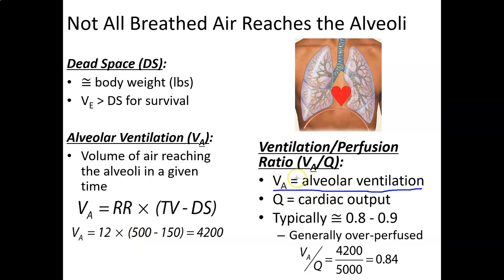Alveolar ventilation is sometimes known as effective ventilation. In order to survive, the VE has to be greater than the dead space. Dead space is best estimated by someone's weight in pounds. Using that magical mythical medical male model — someone who weighs 150 pounds — the dead space equals roughly 150 mL. If your VE was less than 150 mL, you would never get air exchange with new gas and would eventually die, because you have to refill that dead space first before reaching the exchange surface.